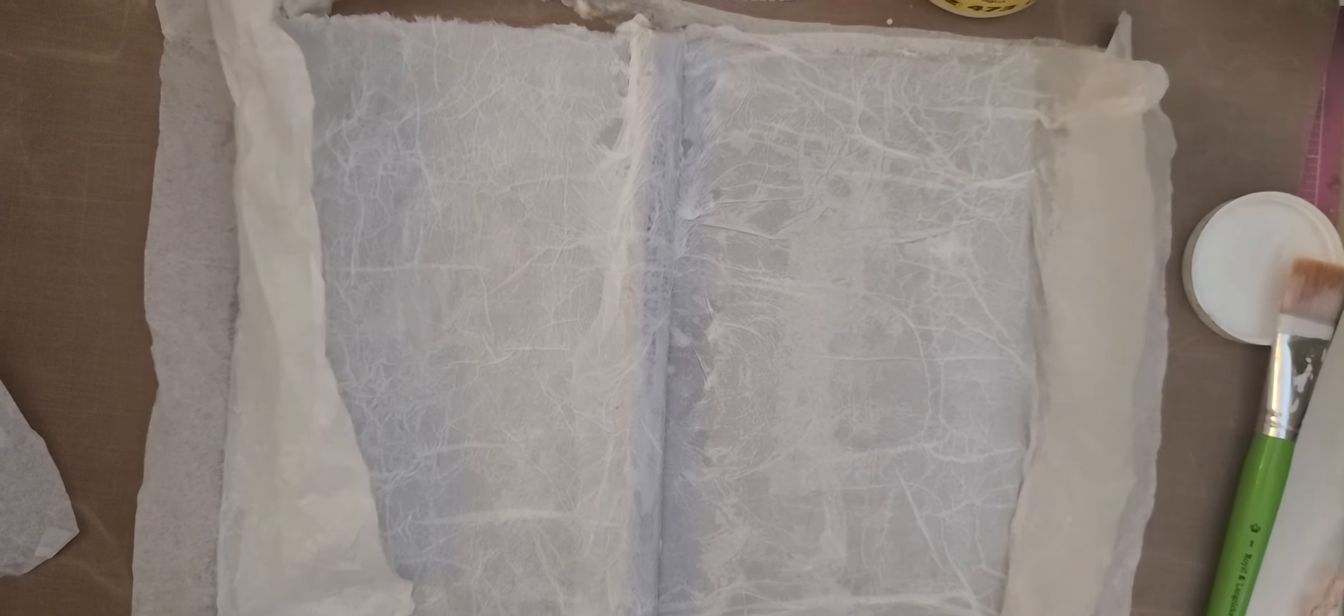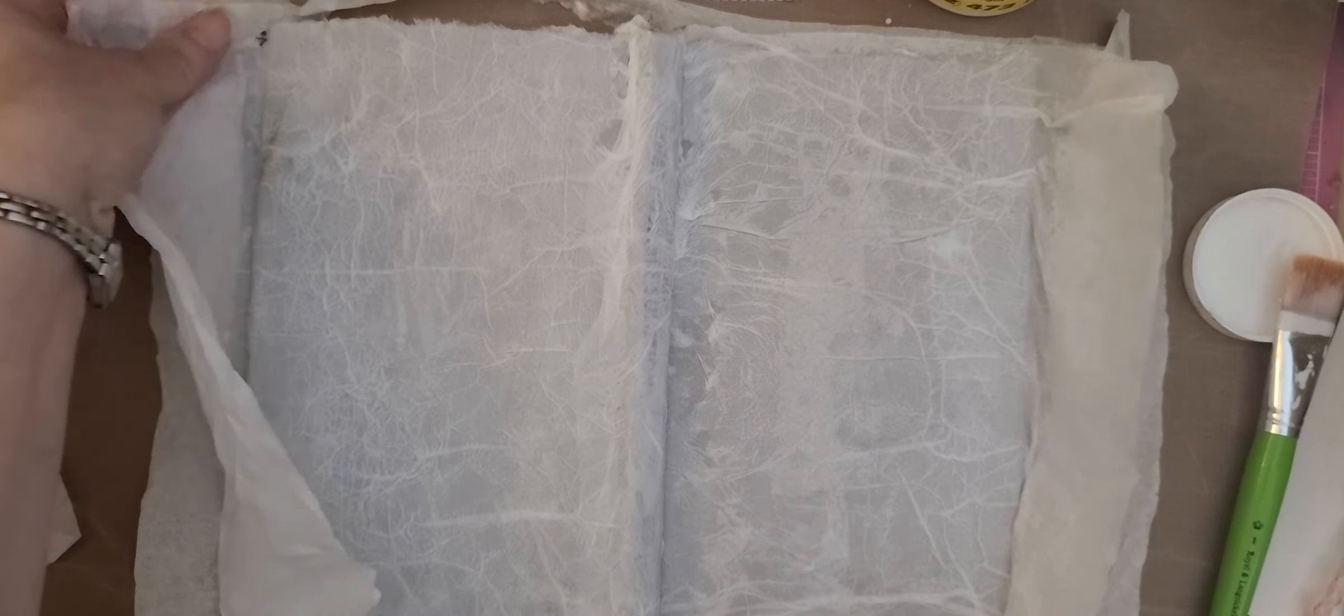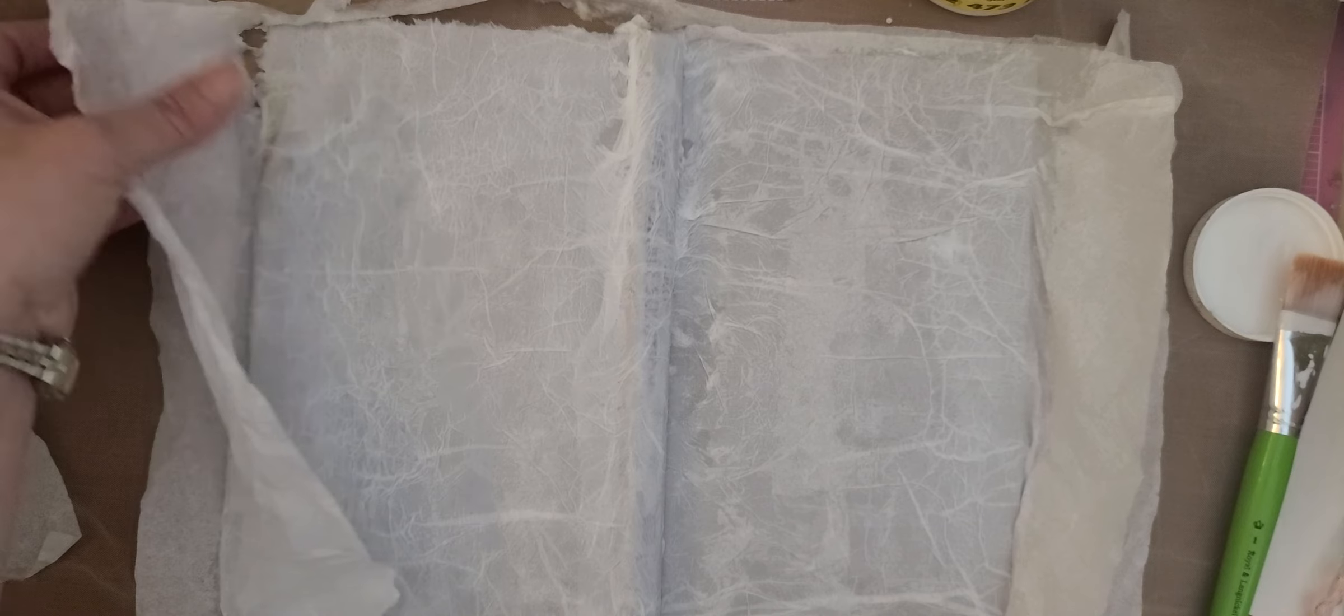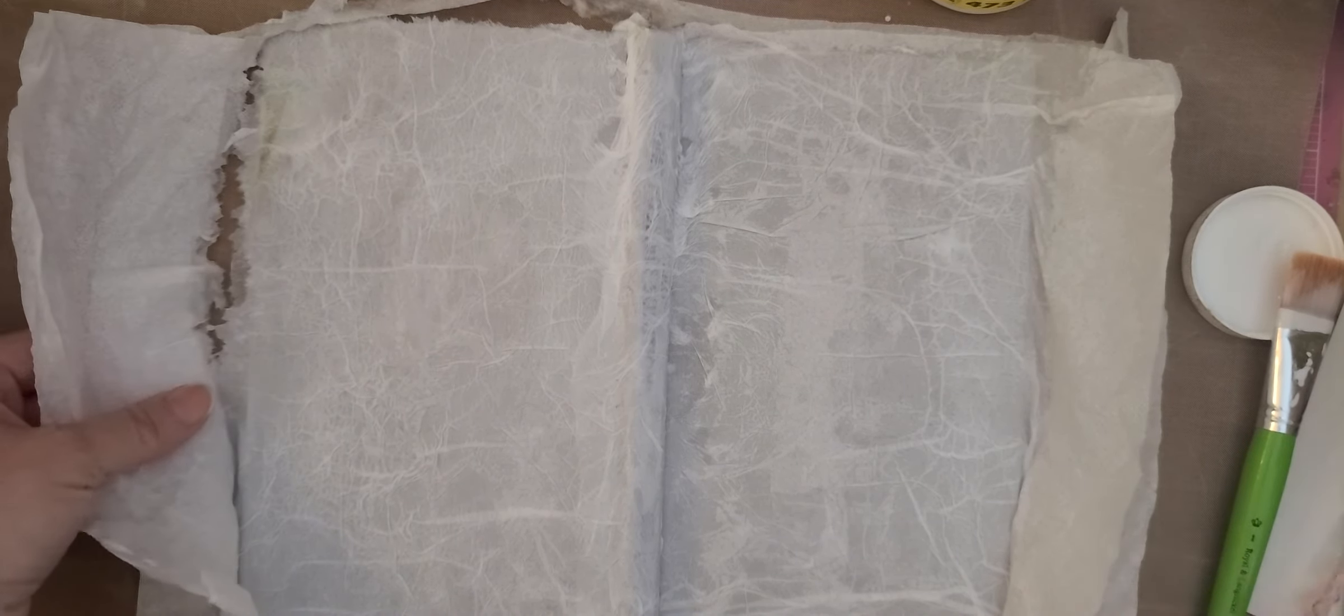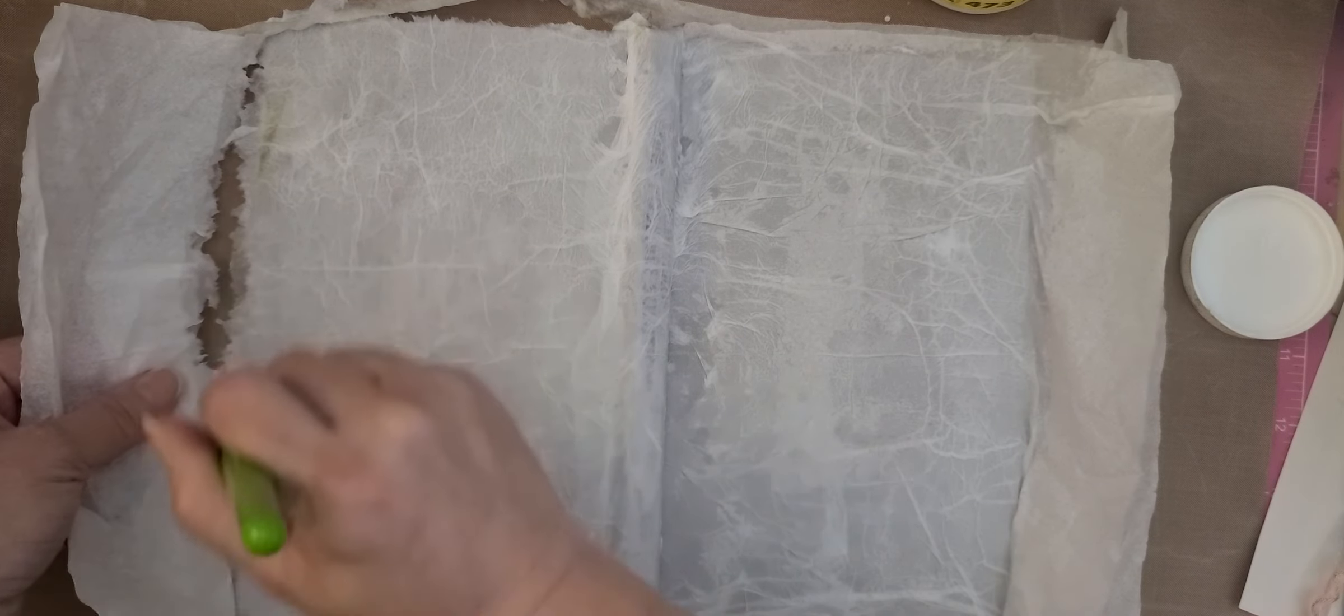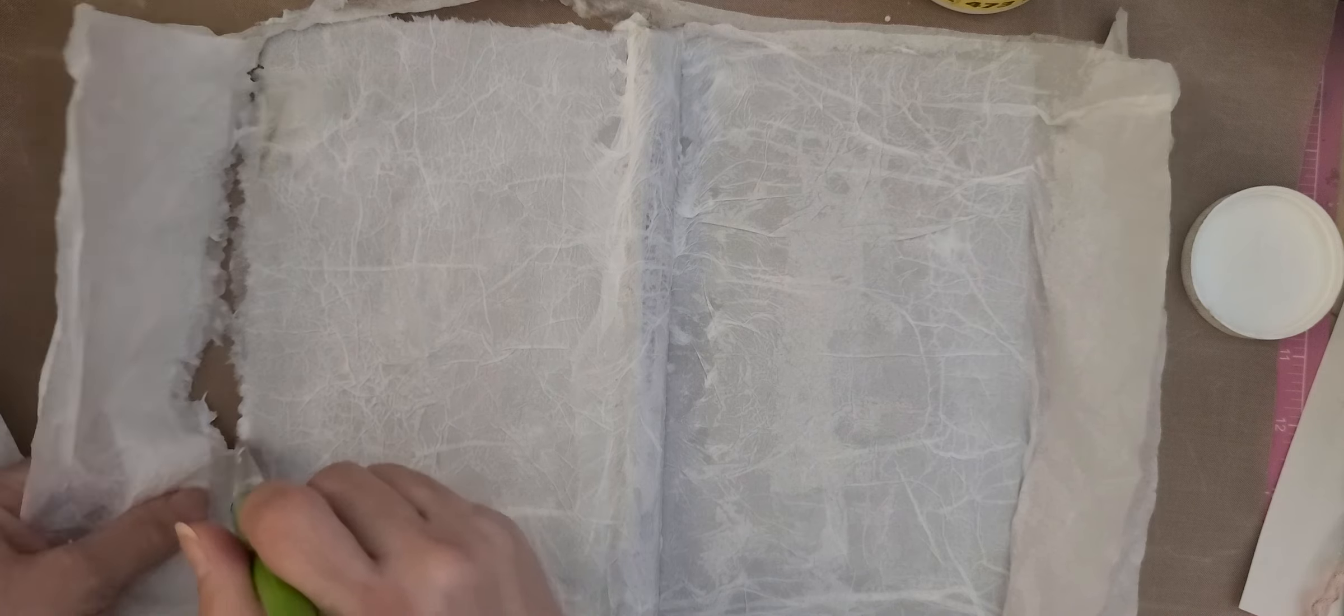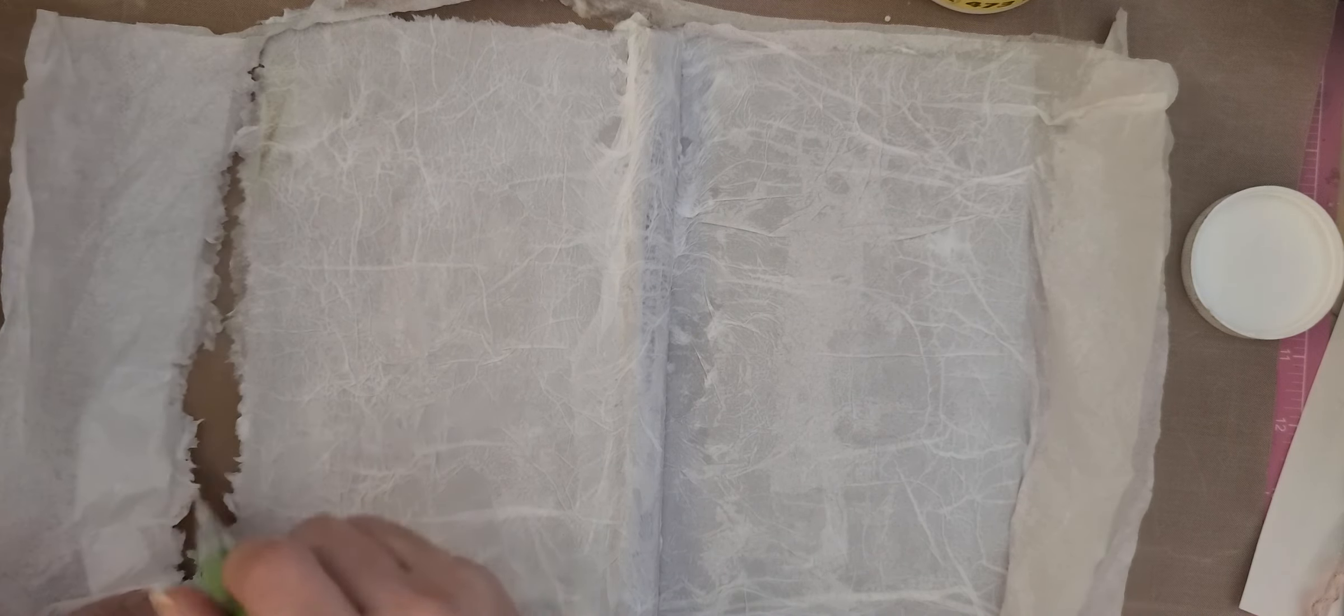Okay I decided not to let it dry. What I decided to do is I'm going to just peel it away from the book. Since we have a couple layers we should be able to, and if we need to we'll just wet it with some mod podge on the side to get it to peel away.